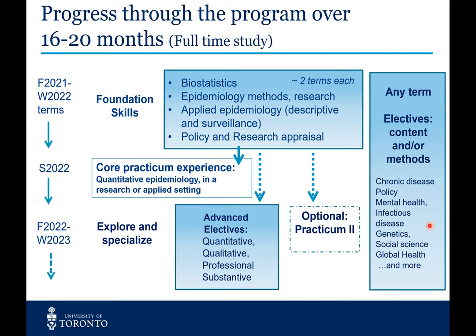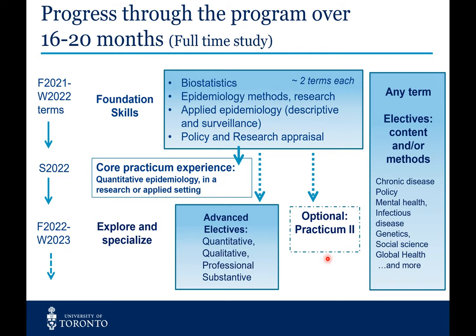If you're interested in infectious disease, you can take more courses in that, and also genetics, social determinants of health, mental health — whatever it might be, we have the electives for that. In the winter term, you can either continue to take electives or take an optional second practicum. The majority of our students do opt into taking the second practicum and find these experiences very rewarding. Then the majority of our students graduate in June of their second year.